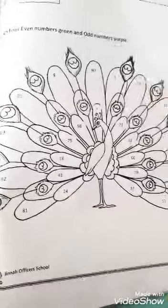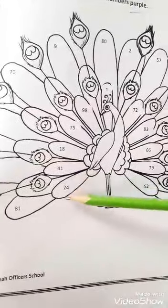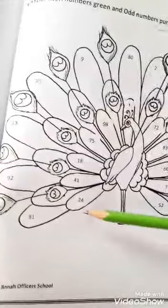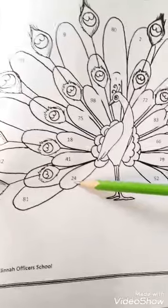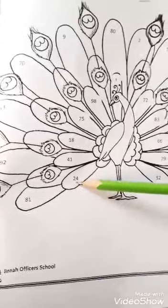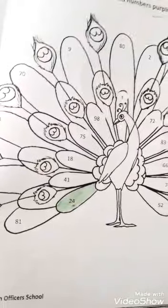Now let's check from 24. In 24, 4 is an even number or odd number? Yes, 4 is an even number. So we will color it green. Like this. We will color it green.